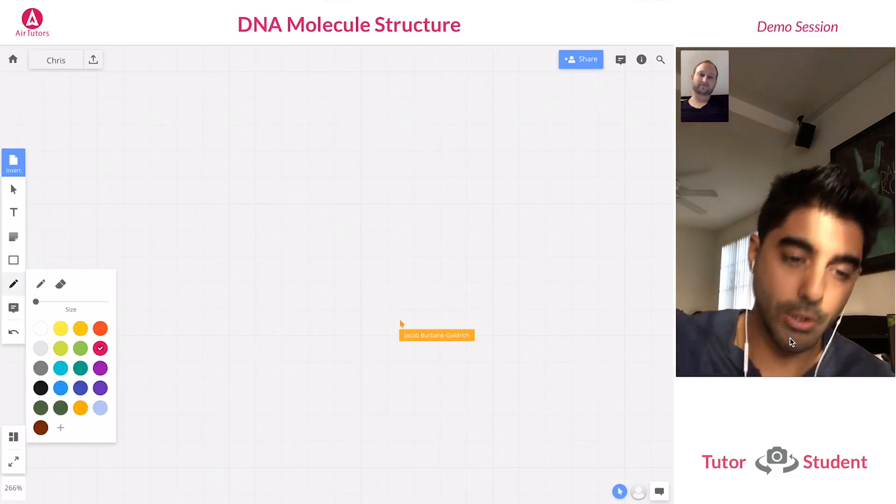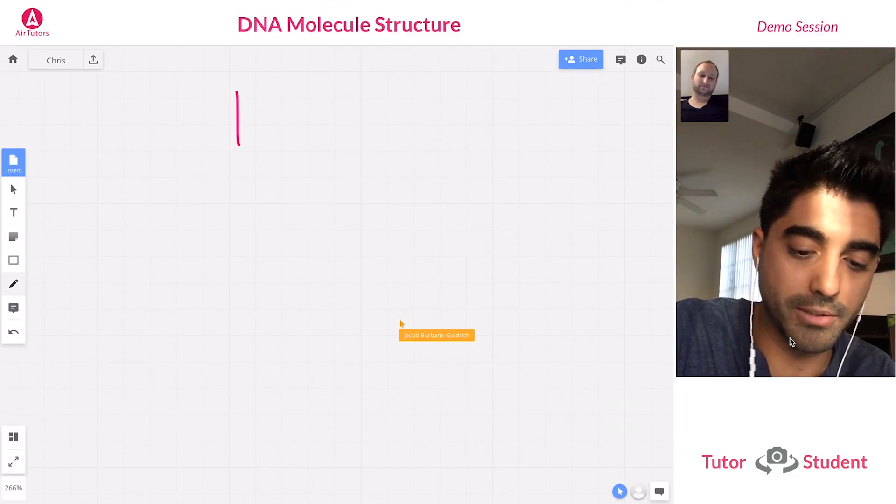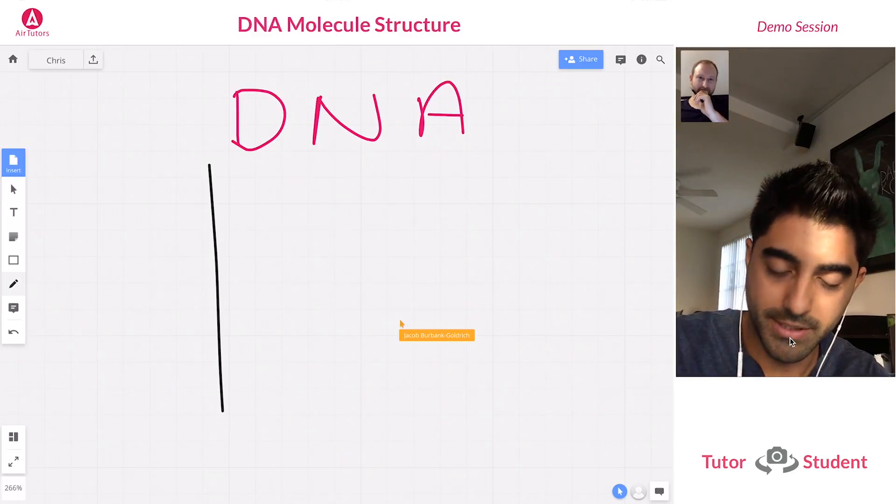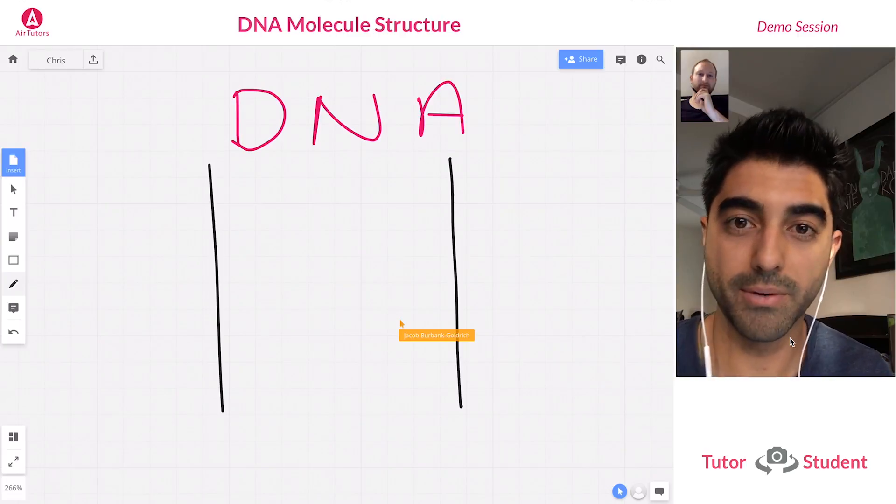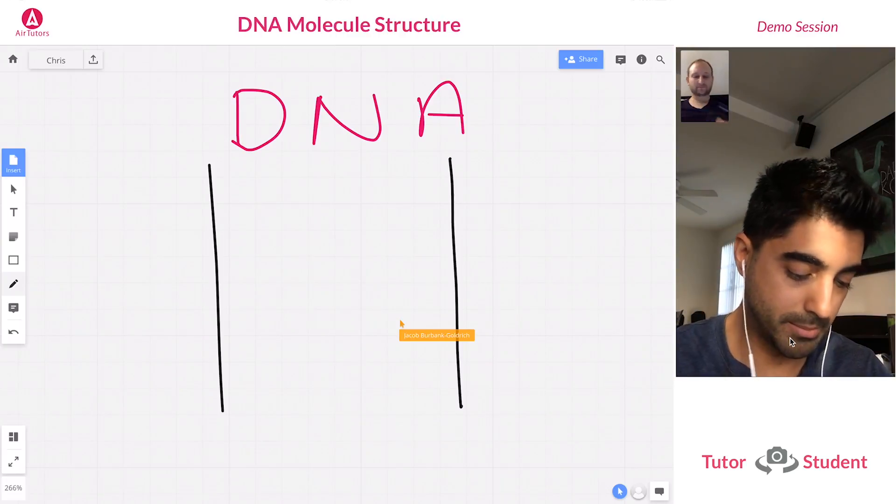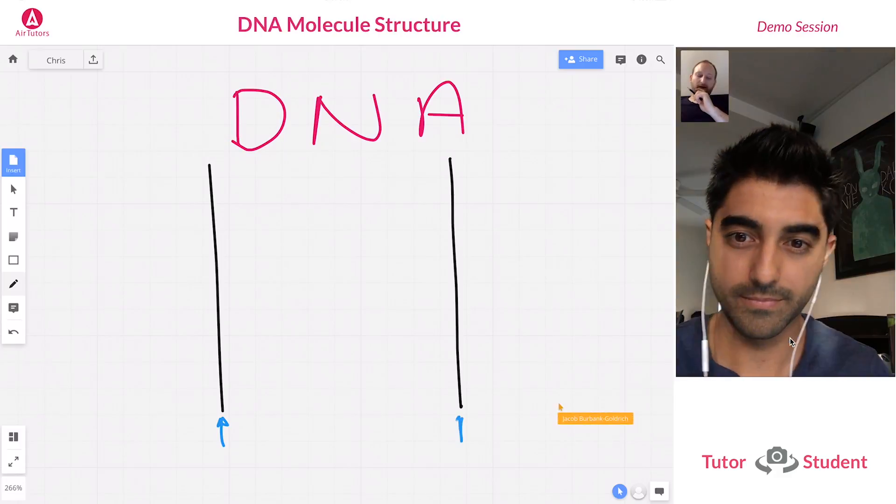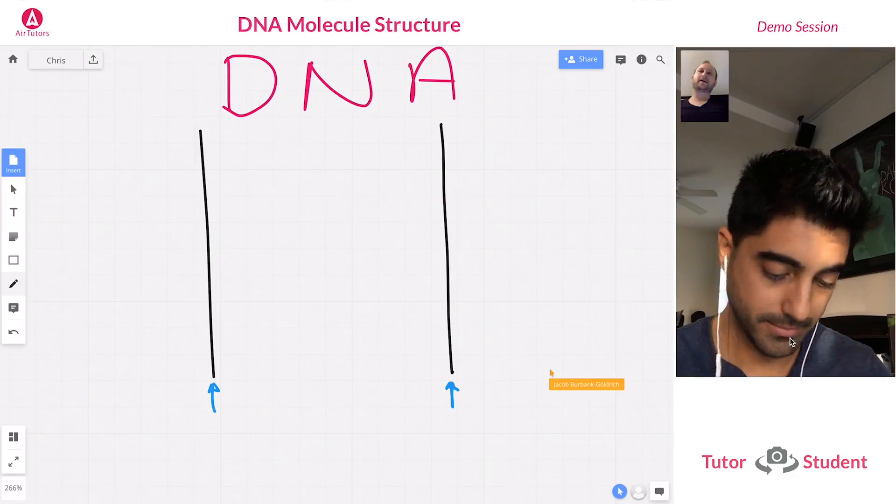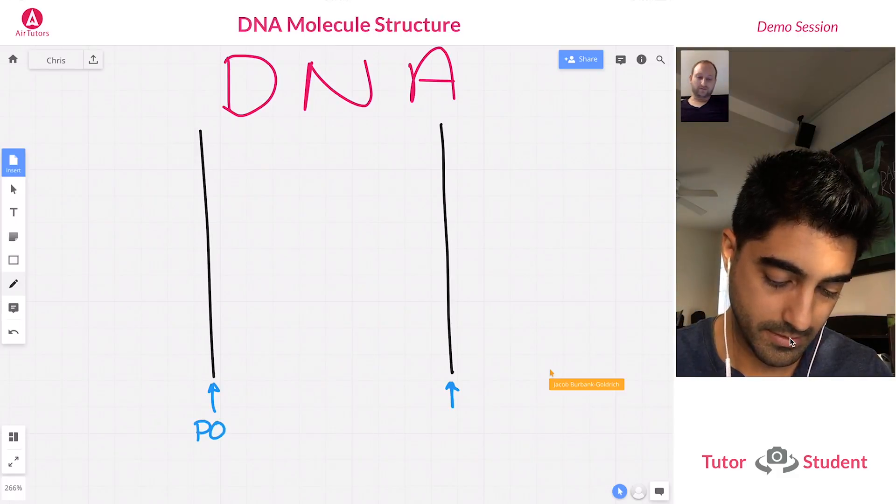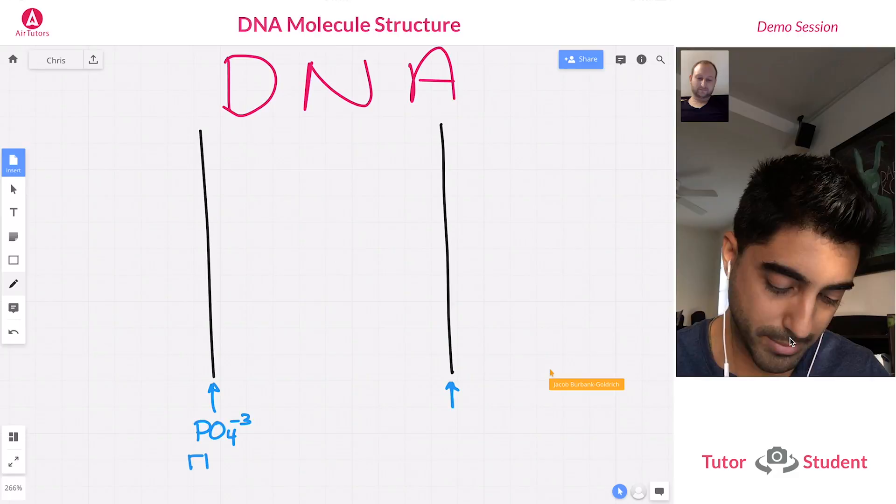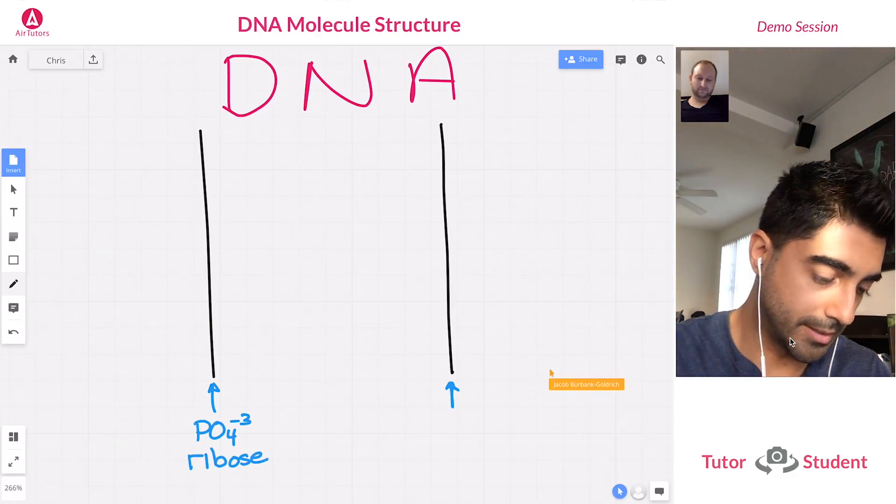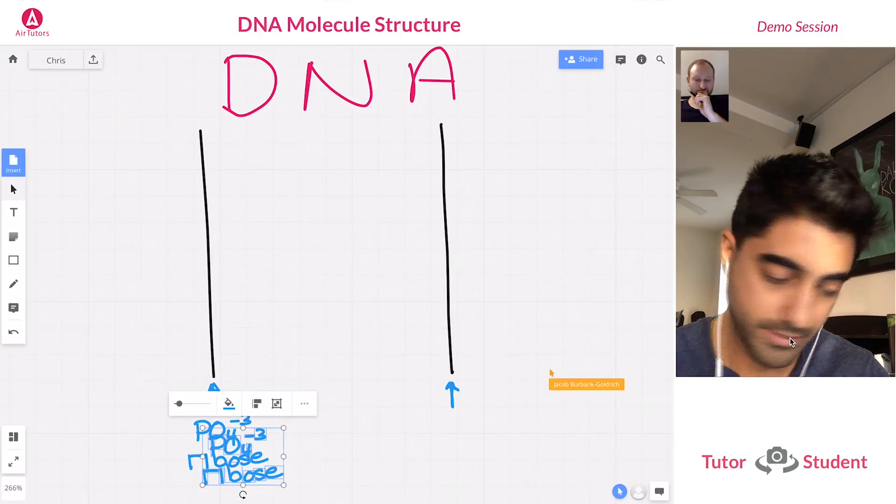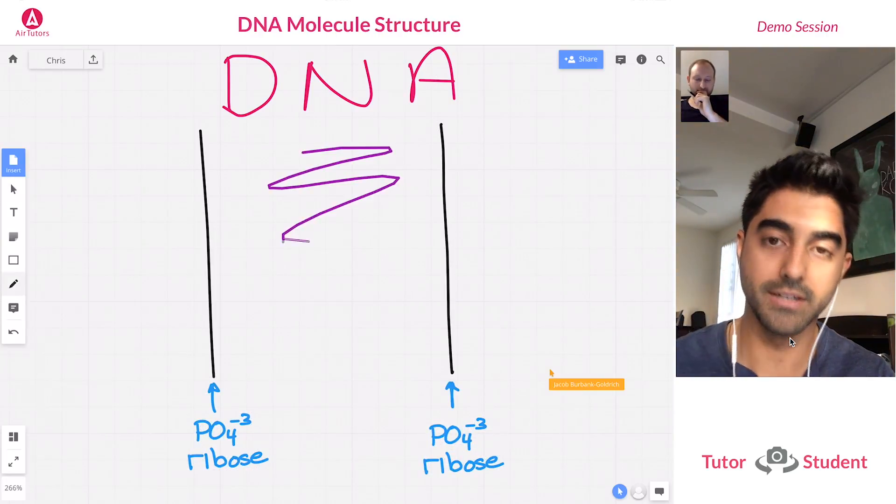So let's go over the DNA molecule today. The DNA molecule is made up of a backbone. Do you remember what two things make up our DNA backbone? Yes, it's a phosphate group and a ribose sugar. Yeah, perfect. So phosphate group and ribose sugar makes up your DNA backbone. But what makes up the inside of our DNA molecule?